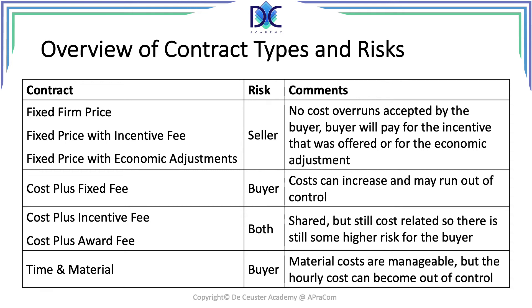With cost plus fixed fee contracts, the risk is typically on the buyer because costs can increase and run out of control. Cost plus incentive fee and cost plus award fee contracts share the risk more, but there is still higher risk for the buyer. Time and material contracts are also typically at risk for the buyer — the material costs may be manageable, but the hourly cost can become out of control as people work longer, meaning you have to compensate for all those hours.